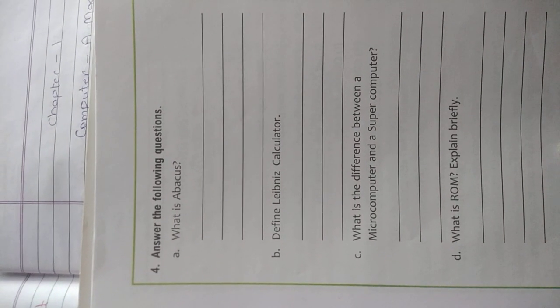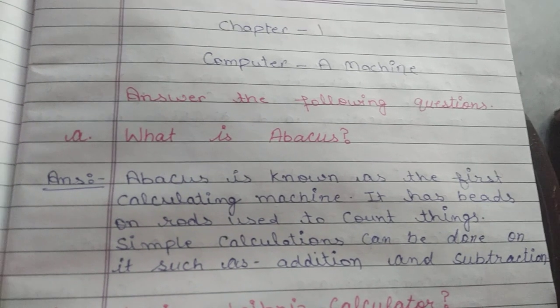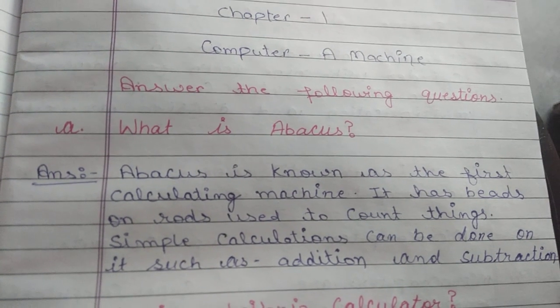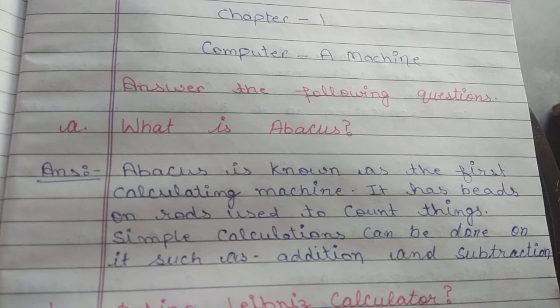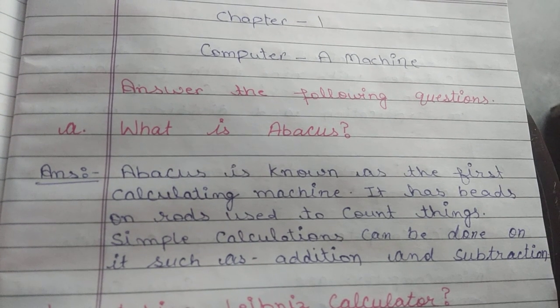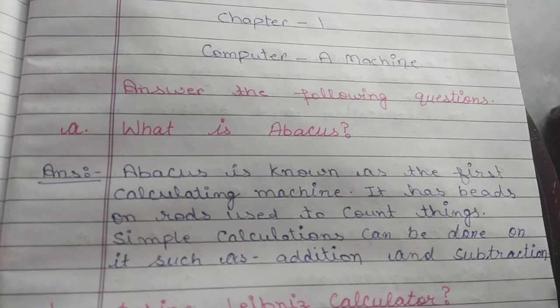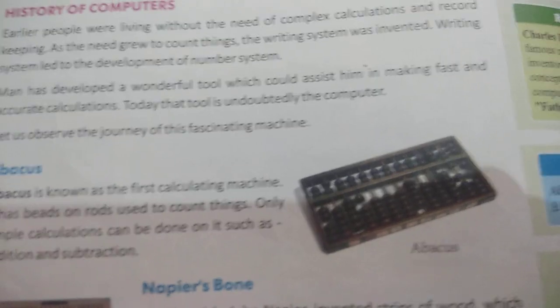Our first question is: what is Abacus? Here is the answer. Abacus is known as the first calculating machine. It has beads on rods used to count things.